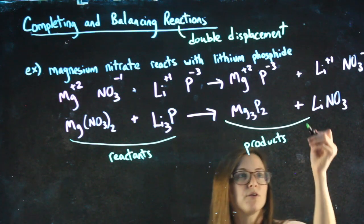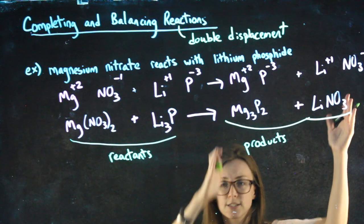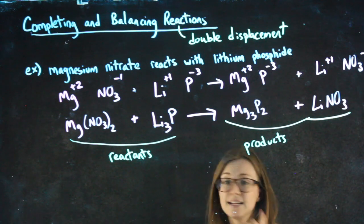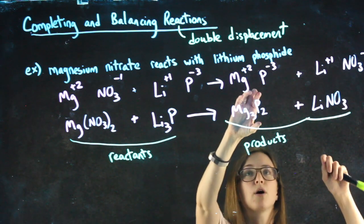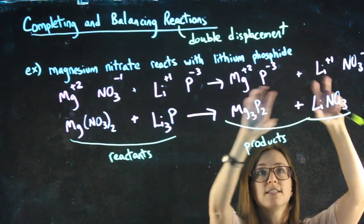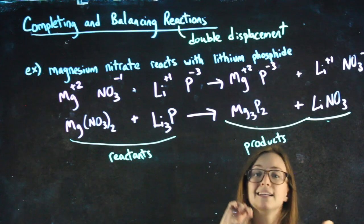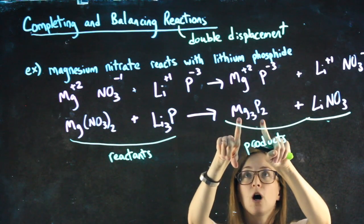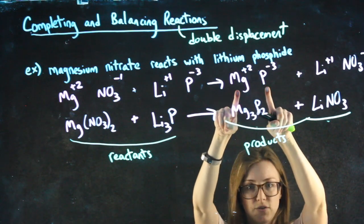So just clarifying a few things: both of those are products, because they're on the right-hand side. It does not matter if I wrote Mg3P2 first or LiNO3 first. These can trade places. It does matter that within each compound, the positive ion's first.